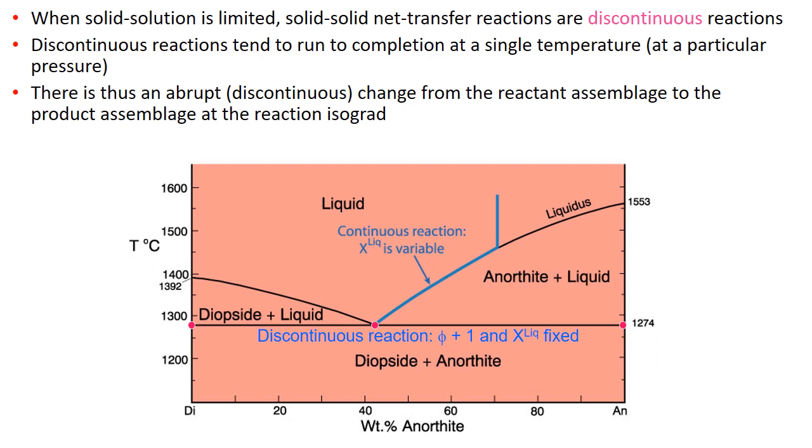Polymorphic transformations, exsolution, and solid-solid net transfer reactions with little solid solution are relatively straightforward metamorphic reactions and are subject to variations in pressure and temperature without complications due to variations in rock or fluid compositions. The presence of reactants versus products has often been used in conjunction with experimental work that constrains the location of the reaction in the P-T-X space to set limits on the temperature and pressure conditions of the metamorphic event.